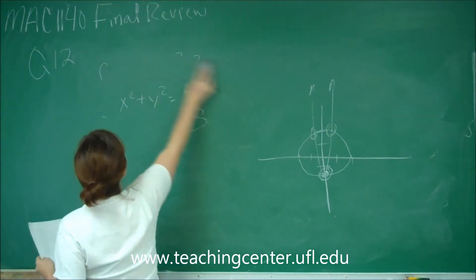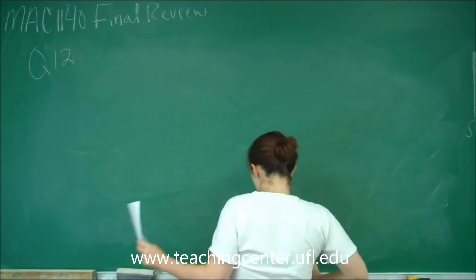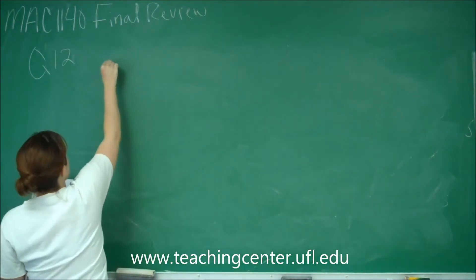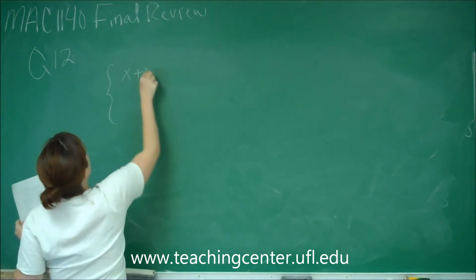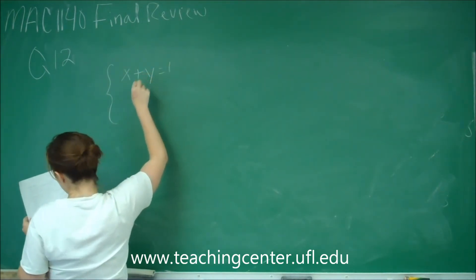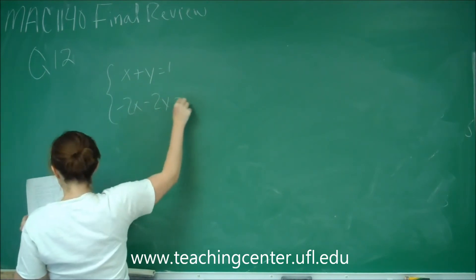And then for part b, they give us another system. It says x plus y equals 1, and negative 2x minus 2y equals negative 2.